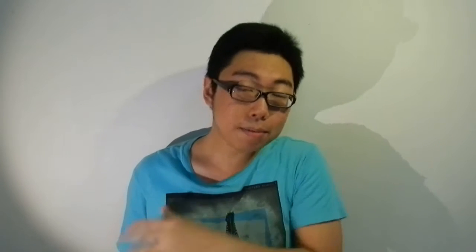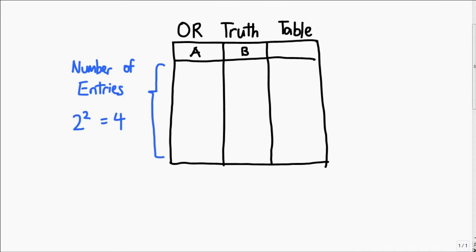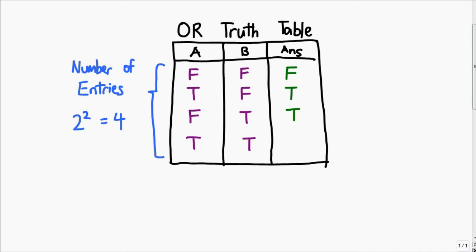To represent all the possible answers from an OR operation between two bits, we use what is called a truth table. In a truth table there are three columns. The left two columns are populated with all possible input values — since we have two bits each with two possible values, there are two to the power of two, or four total input values: false false, true false, false true, and true true. The rightmost column is the output given the input in the same row. False false gives you false, and everything else gives you true. We're going to move on and cover a few more operations.